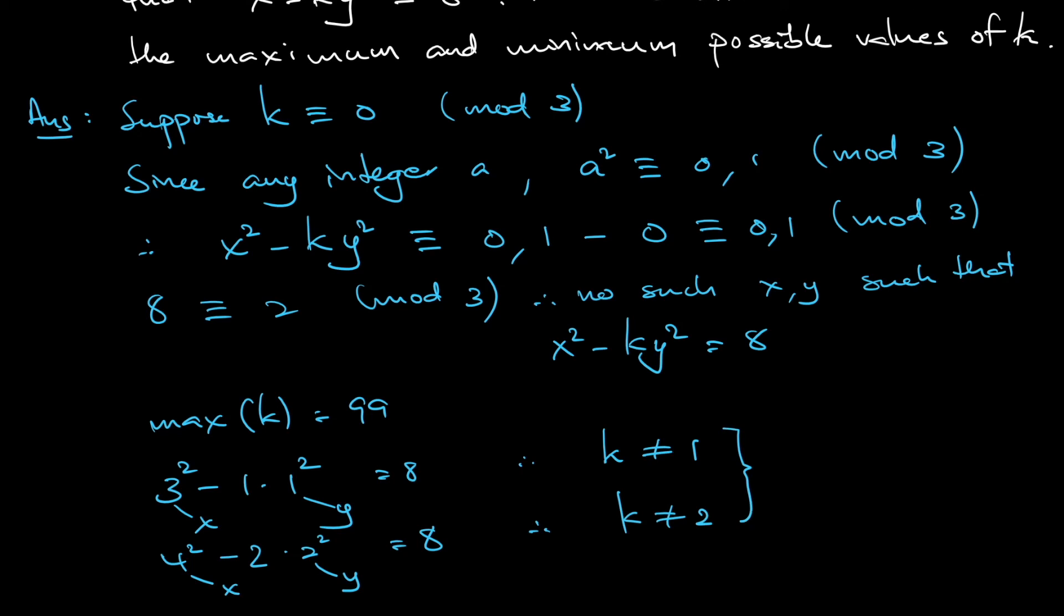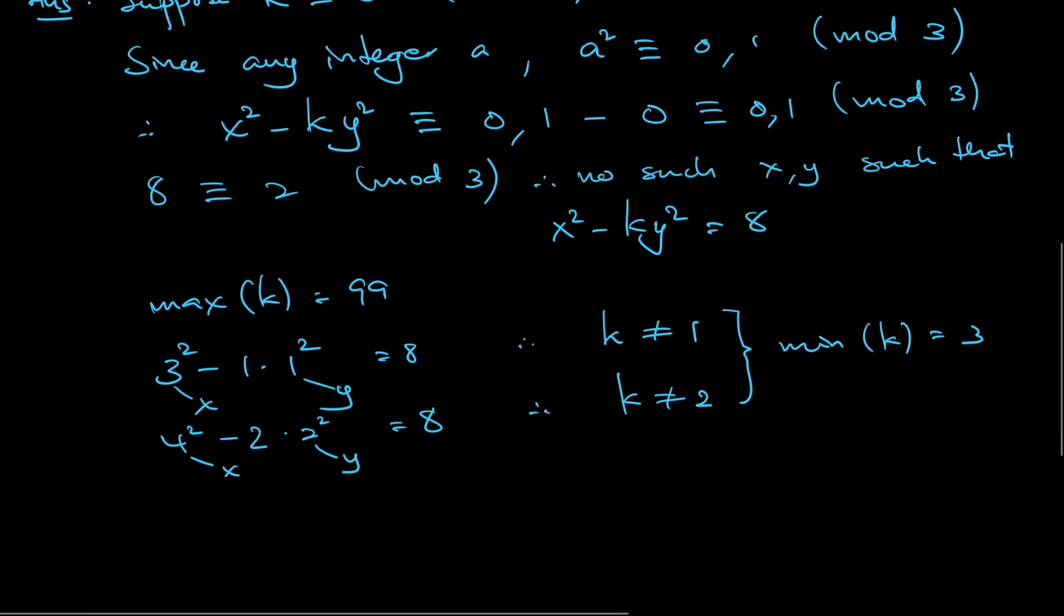So k cannot be 1, k cannot be 2, and we just said all multiples of 3 can be k. So that means that minimum of k is 3. So the question is, hence, the difference between the maximum and the minimum. So maximum of k minus the minimum of k is equal to 99 minus 3. The answer is, the difference is 96.